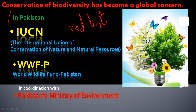In Pakistan, all agencies — government, national, foreign, and non-governmental — are doing much work and taking steps to protect biodiversity. The International Union of Conservation of Nature and Natural Resources, called IUCN, and WWFP — World Wildlife Fund Pakistan — in collaboration with Pakistan's Ministry of Environment, are working in coordination to take steps and make a set of rules to protect biodiversity.